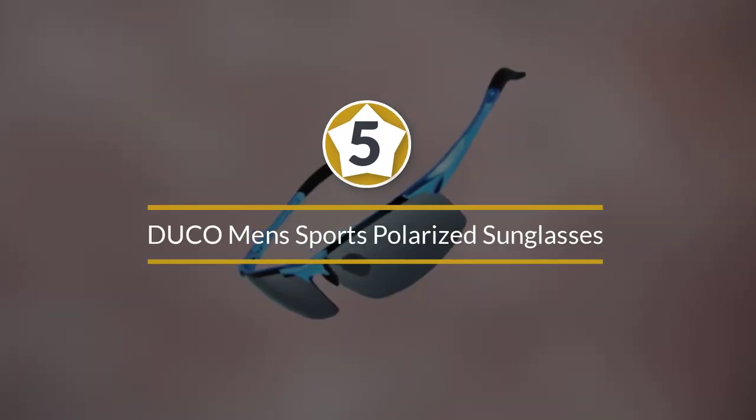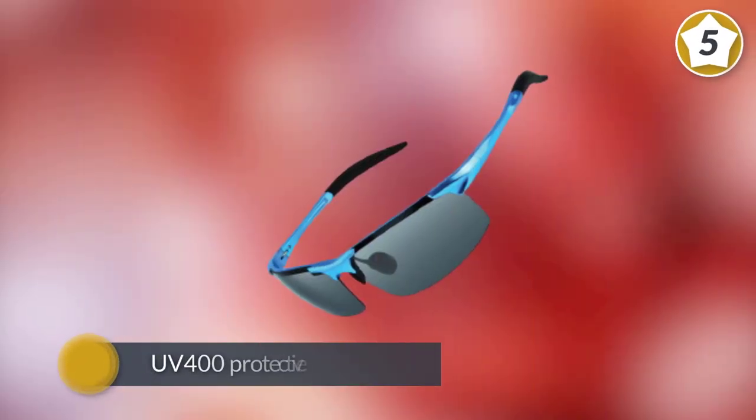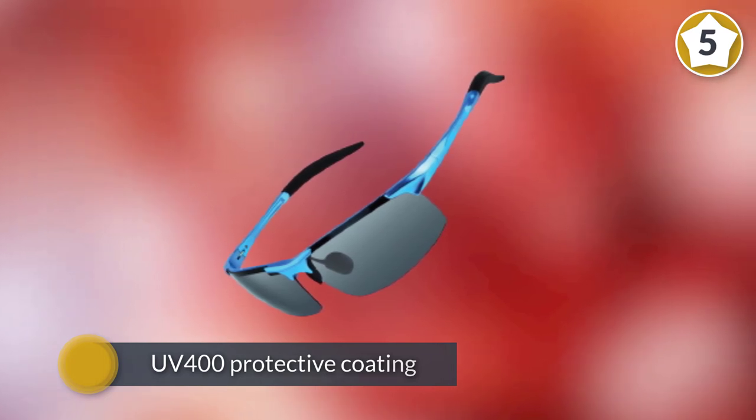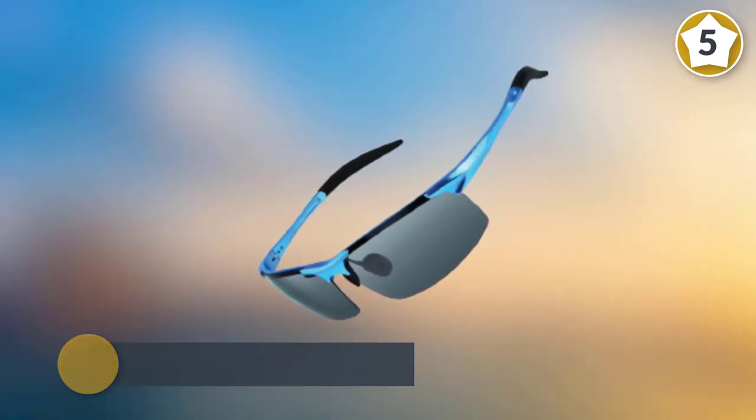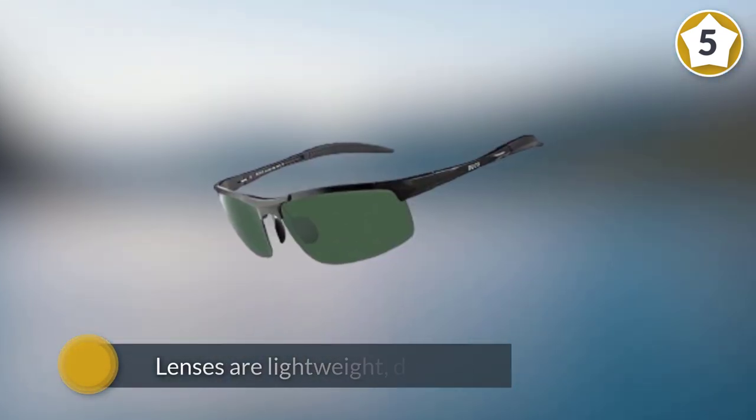Number 5: Duco Men's Sports Polarized Sunglasses. These sunglasses have a polarized lens with a UV400 protective coating that blocks 100% of UVA and UVB rays. The lenses are lightweight, durable, and impact and scratch-resistant.